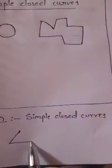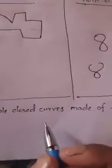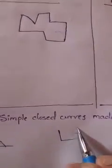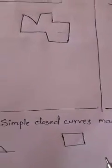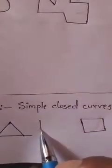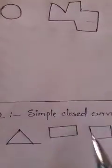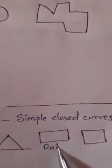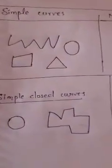Now comes polygon. The definition of polygon is: a polygon is a simple closed curve made of line segments only. A square is a simple closed curve and it is a polygon because it is made up of line segments only. A rectangle is a polygon because it is made up of line segments only, having four line segments. A triangle is also a polygon. Polygons are simple closed curves made of line segments only.